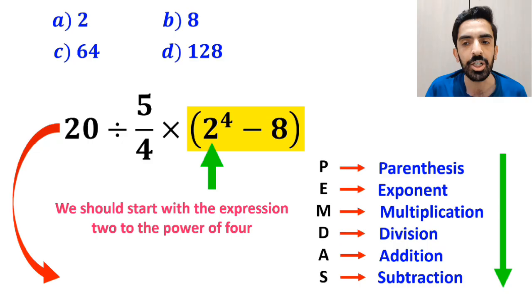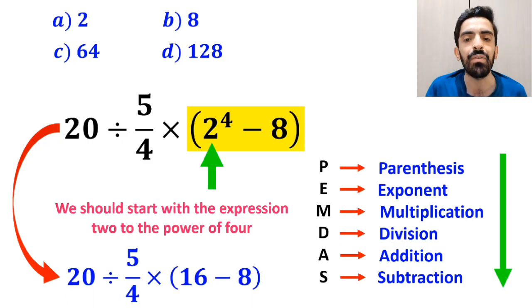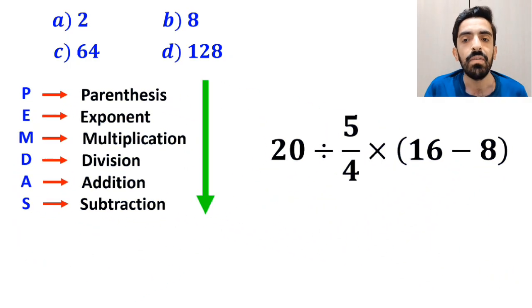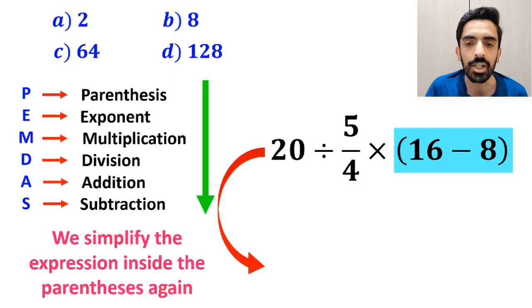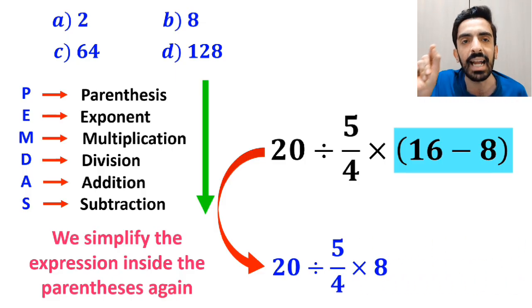So, instead of this expression, we can write 20 divided by 5 over 4 multiplied by 16 minus 8 inside the parentheses. And in the next step, we simplify the expression inside the parentheses again. And instead of this expression, we can write 20 divided by 5 over 4 multiplied by 8.